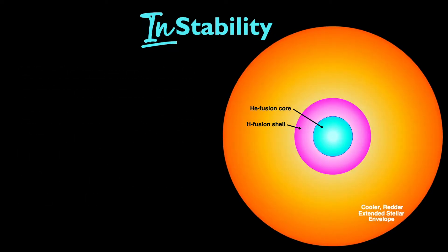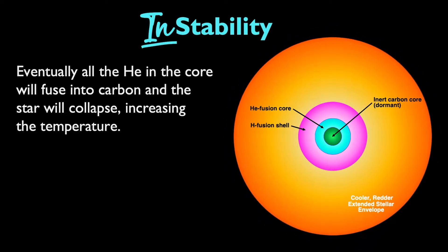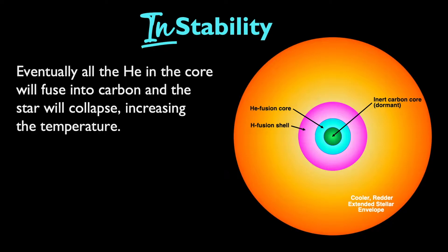Eventually, all of the helium in the core will be used up in creating carbon, and the core will start to fill up with that newly produced carbon. At this point, hydrostatic equilibrium is lost again, so the star collapses and its temperature increases. However, there just isn't enough mass in what was originally a medium-mass star to raise the pressure and temperature high enough to ignite carbon fusion in the core.